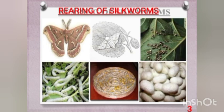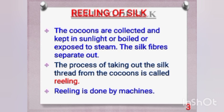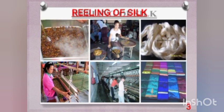In the picture you can clearly see the rearing of silkworms. Reeling of silk is the process in which cocoons are collected and then exposed to sunlight or boiled, causing silk fibers to come out. These fibers are collected — that is reeling. Nowadays, reeling is done by machines.